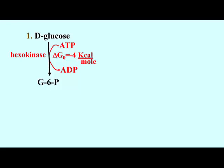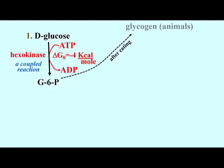Immediately after a meal, glucose enters your bloodstream in the small intestine, usually in large amounts, where much of it enters the liver — that's the first stop for ingested nutrients. The rest of the glucose, once it's passed the liver, is distributed to all cells. In plants, photosynthetic cells synthesize glucose from scratch. Inside the cell, glucose is quickly converted to glucose 6-phosphate. Any G6P not needed immediately for its free energy would be stored as glycogen in animals or as starch in plants.